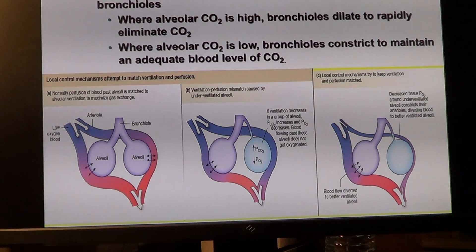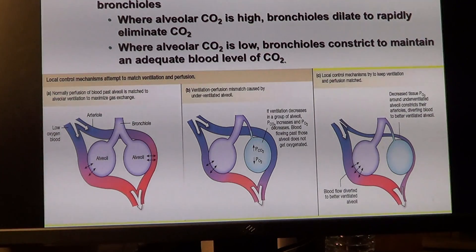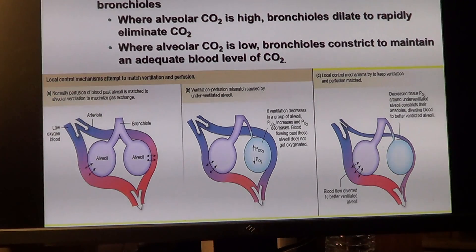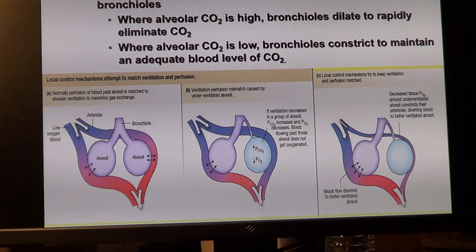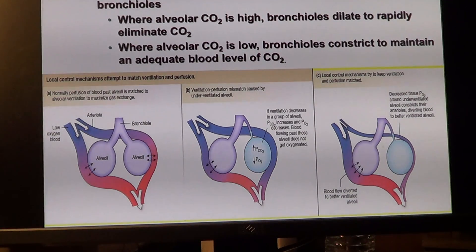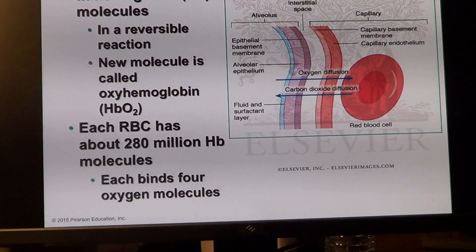When we hyperventilate and remove a lot of carbon dioxide, we have to breathe into a brown bag without any influx of oxygen in order to replace the carbon dioxide deficiency, because it's essential for the bicarbonate buffering system. Oxygen on the arterial side and carbon dioxide on the bronchiolar side both play a role in this coordination to maintain adequate gas exchange.